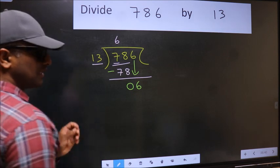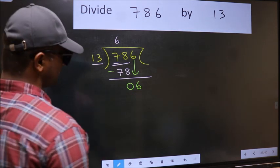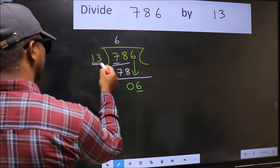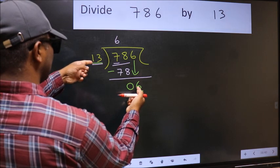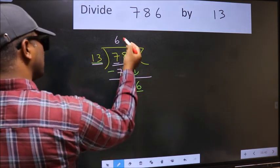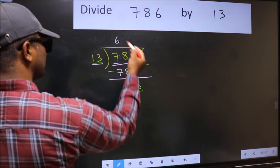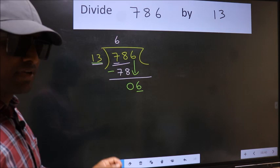After this step, the mistake happens. And the mistake is this. Here we have 6 and here 13. 6 is smaller than 13.